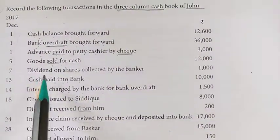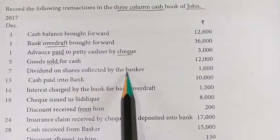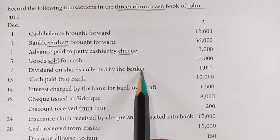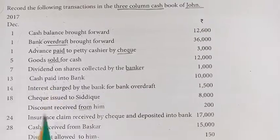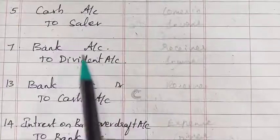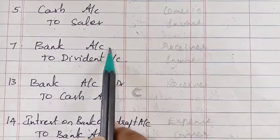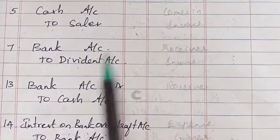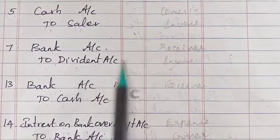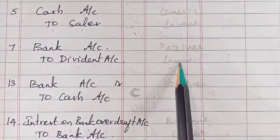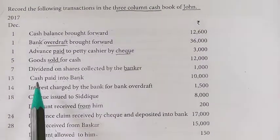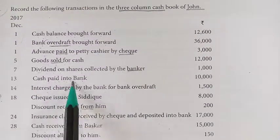Next, seventh day: dividend on shares collected by the bank. That will come on the credit side.